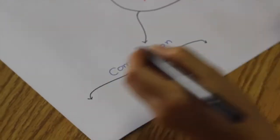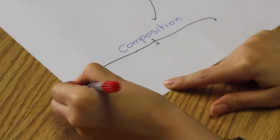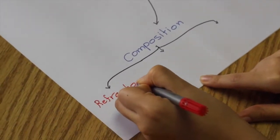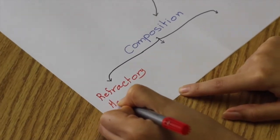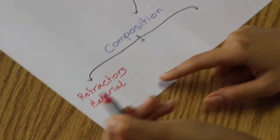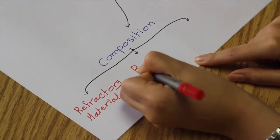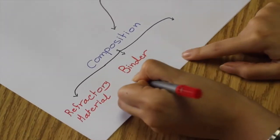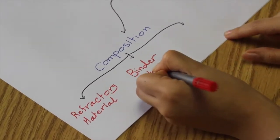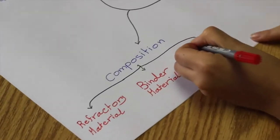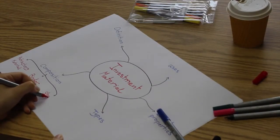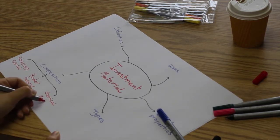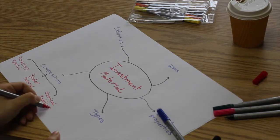The investment material consists of a mixture of three components. One: refractory material, in the form of silica. Two: a binder material, capable of binding the refractory material to form a coherent solid mass. Three: chemical modifiers — non-oxidizing agents, retarders, accelerators, and coloring agents — are added to enhance their physical properties.